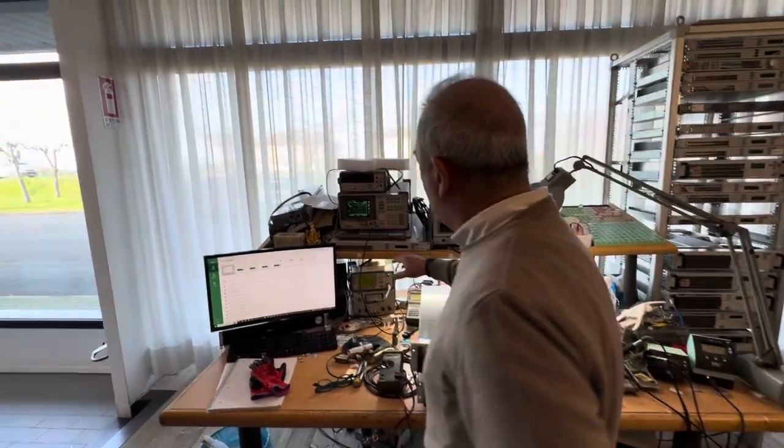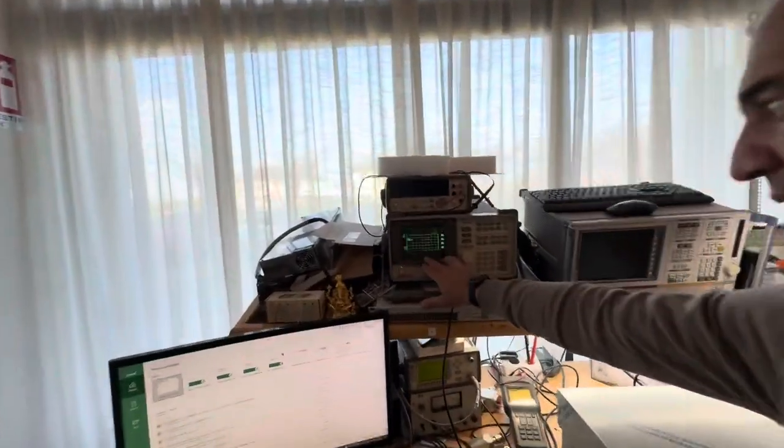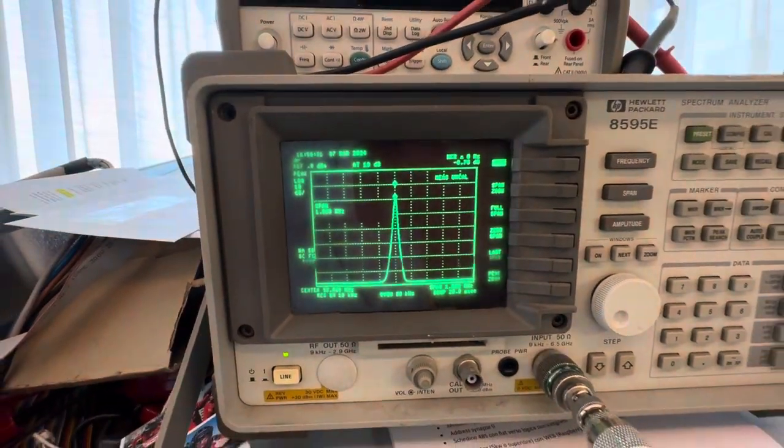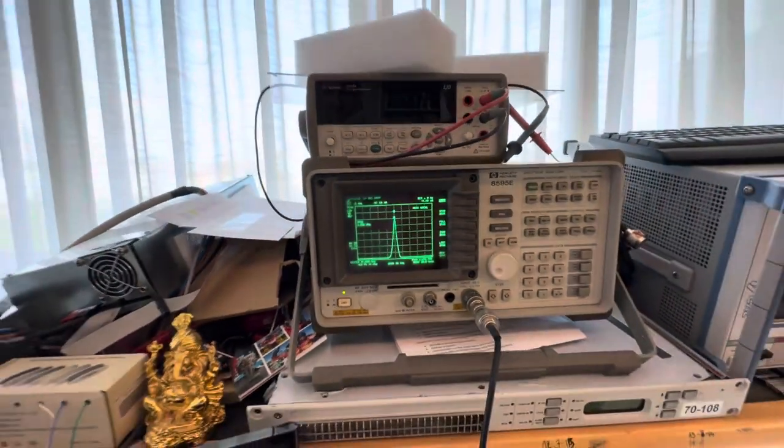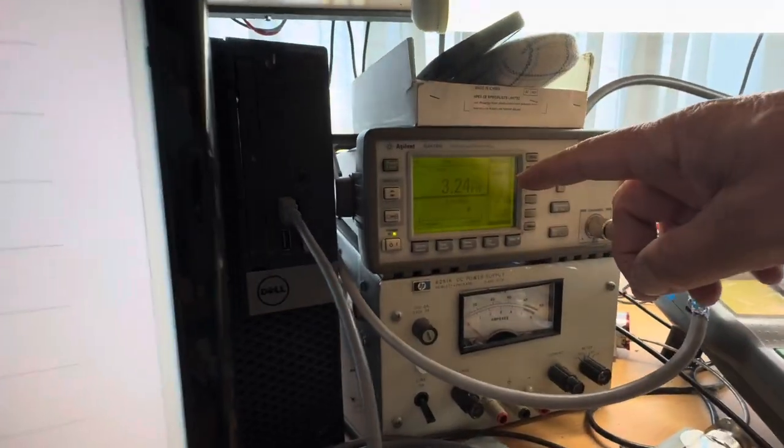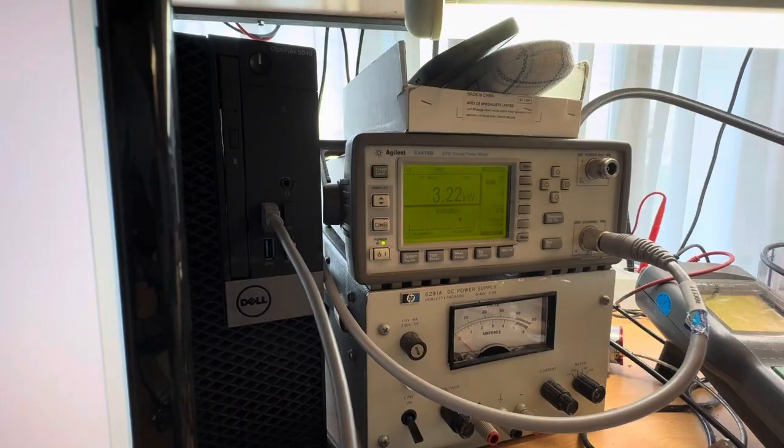You can see now the amplifier. Now we are in CW with the output of modulation, and we can see the output power is 3.2 kilowatts.